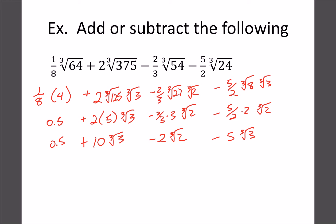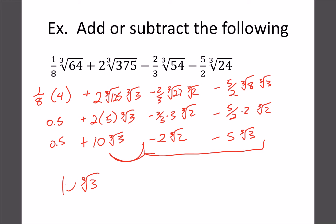Now combining like terms: the 10 cube root 3 and negative 5 cube root 3 combine to give positive 5 cube root 3. The negative 2 cube root 2 stays on its own, and the one-half by itself also can't be combined with anything. So the final answer is one-half plus 5 cube root 3 minus 2 cube root 2. The order you write them in doesn't matter.